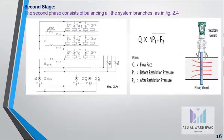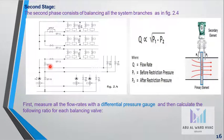Second stage: the second phase consists of balancing all system branches as in the figure. We already balanced the first column here, so we will go to the next column in the system, which is ST4, ST5, ST6. We will repeat the same steps as stage number one.